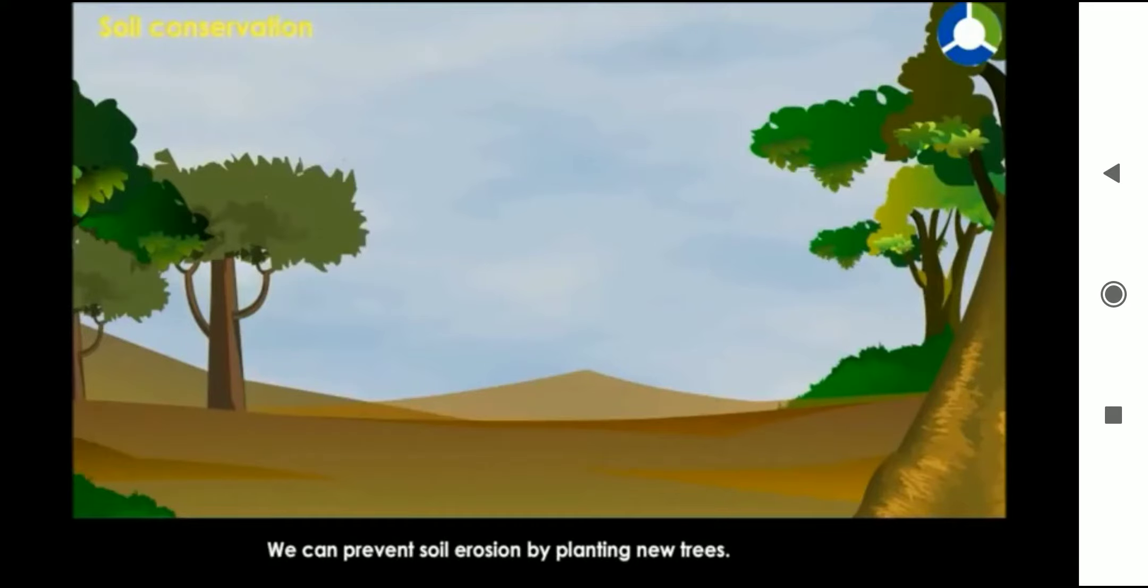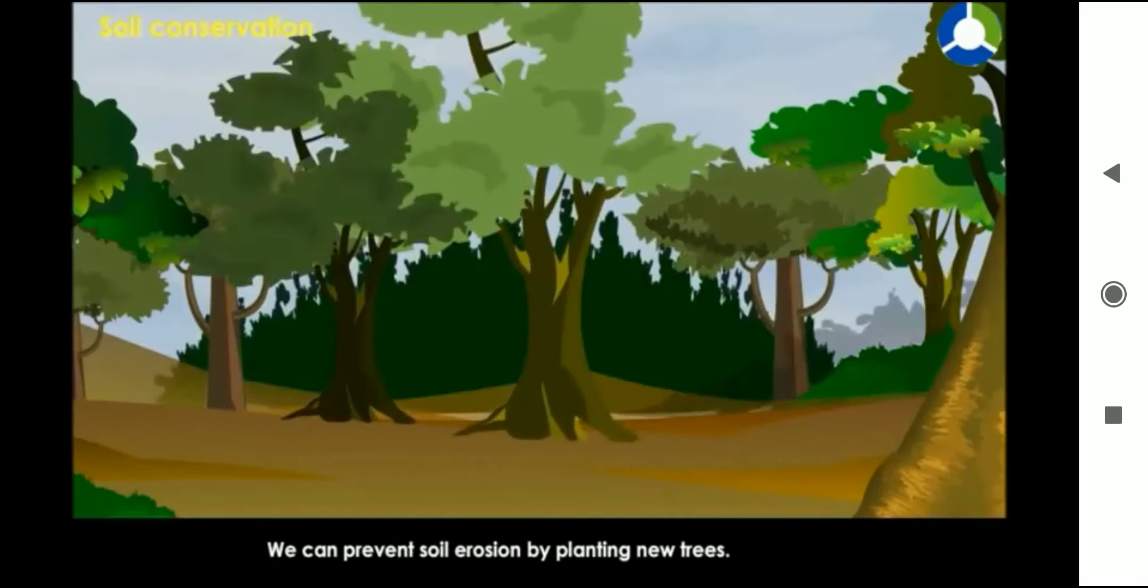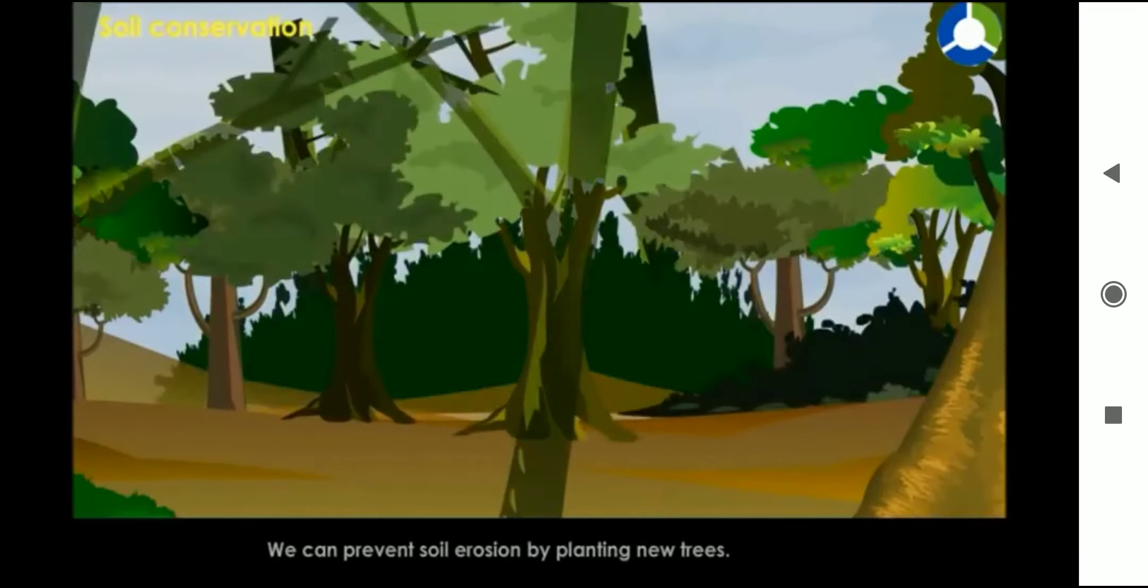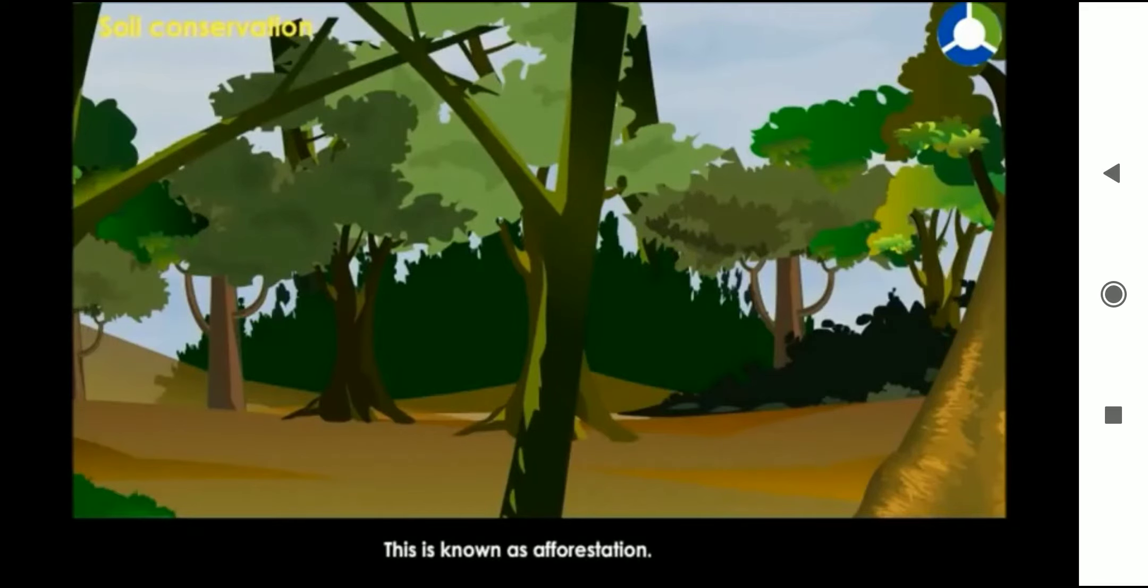We can prevent soil erosion by planting new trees. This is known as afforestation.